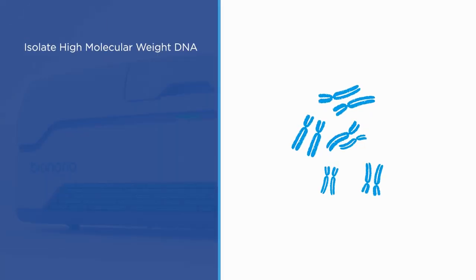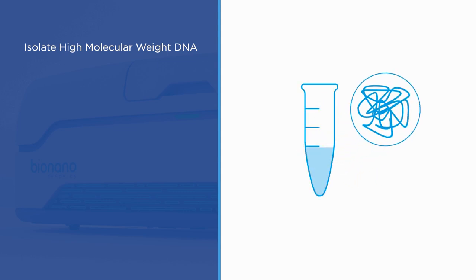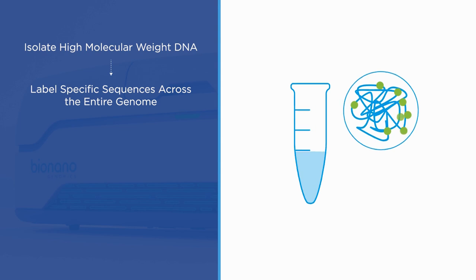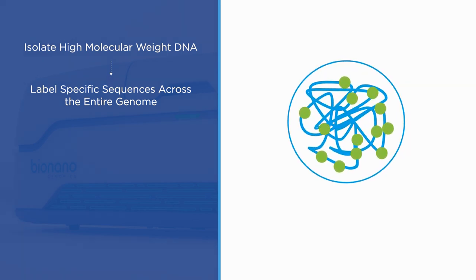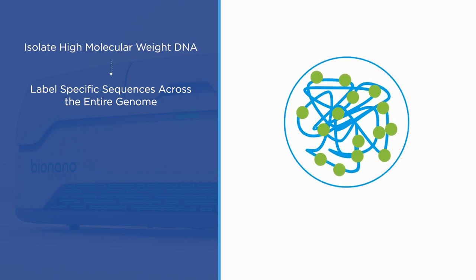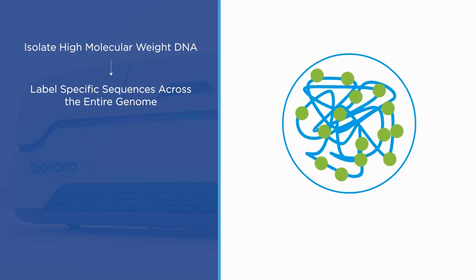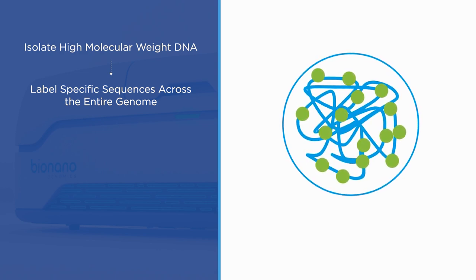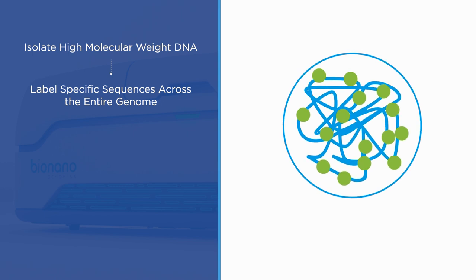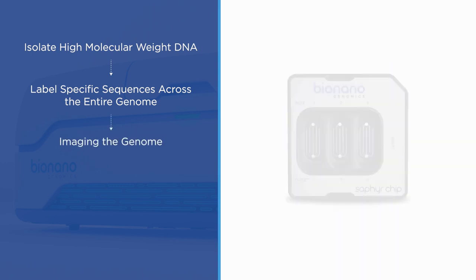First, native ultra-high molecular weight DNA, multi-megabase pairs in length, is isolated. Fluorescent labels are enzymatically attached to these ultra-long molecules of DNA at a specific sequence motif that occurs throughout the genome. The resulting label patterns are unique for each section of the genome. The full length of the DNA remains intact during isolation and labeling, preserving the architecture for the next step: imaging the genome.